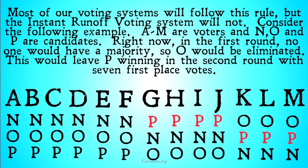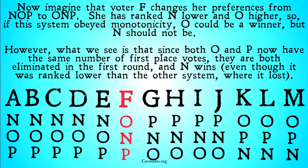But now let's say that one of N's voters gets clever. Imagine that voter F changes her preference from N, O, P to O, N, P — she ranked N lower and O higher. So if the system obeyed monotonicity, O could be a winner, but N should not be. However, what we will see is that since now both O and P have the same number of first place votes, they are both eliminated in the first round — they each have 4, and N has 5, so N stays alive and N wins, because there are no other candidates in the race.